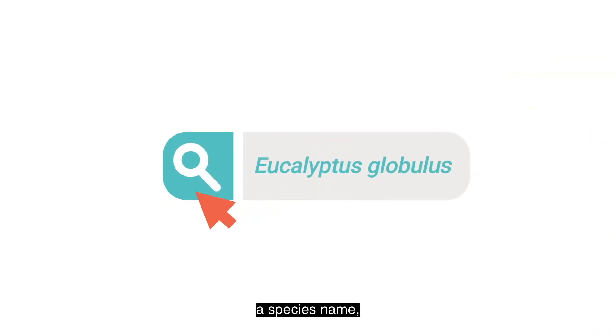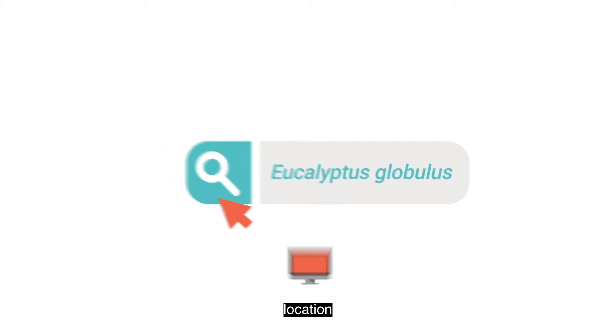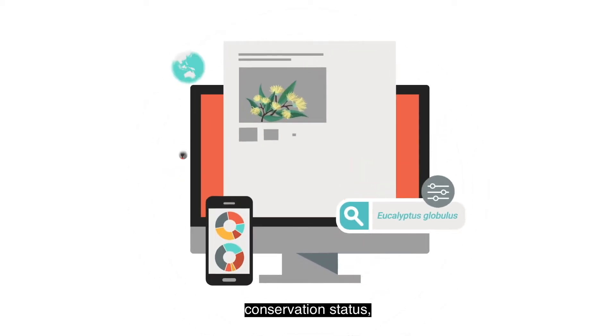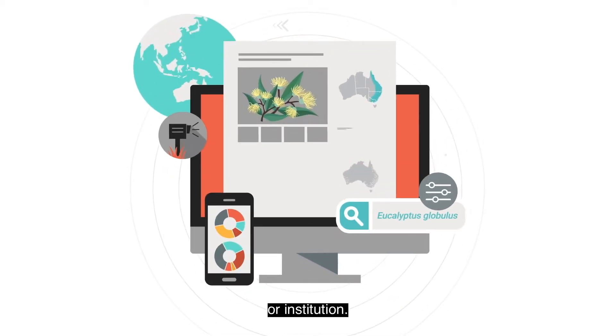You can search the ALA by using a species name, data set, location, conservation status or institution.